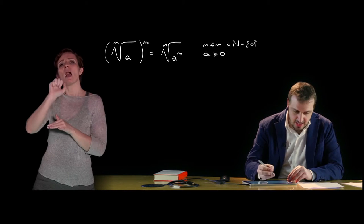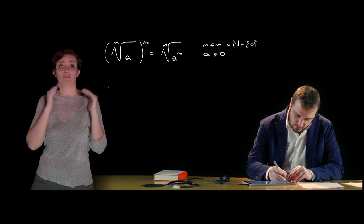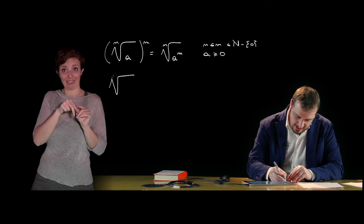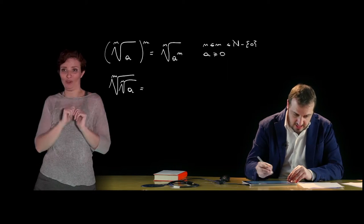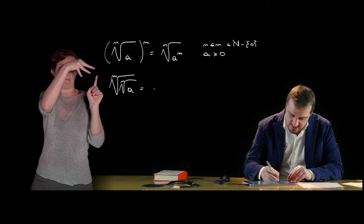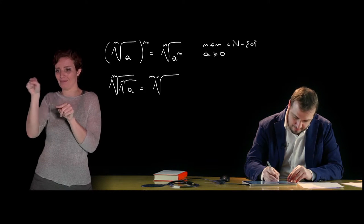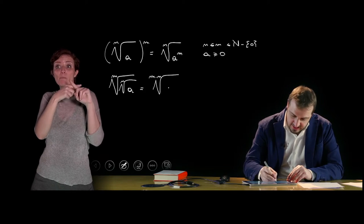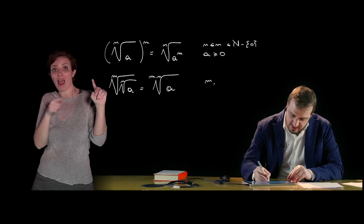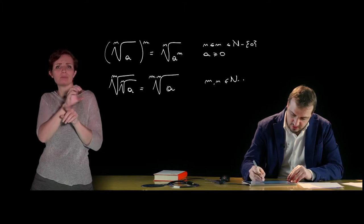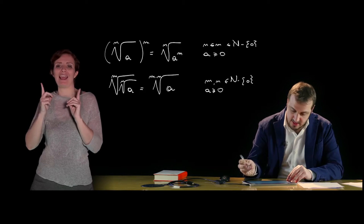Analogously, the mth root of a radical of index n is equivalent to a radical whose index is the product m × n and whose radicand is the same radicand. This too holds for m, n ∈ ℕ \ {0} and A ≥ 0.